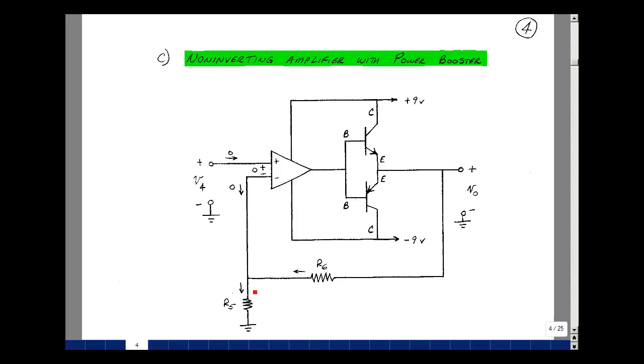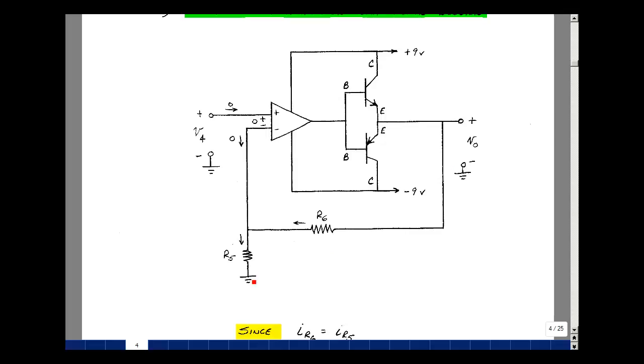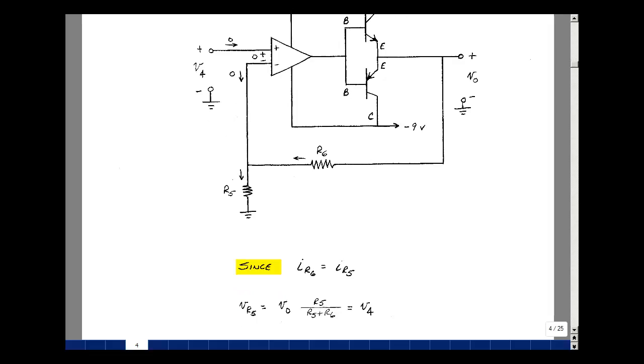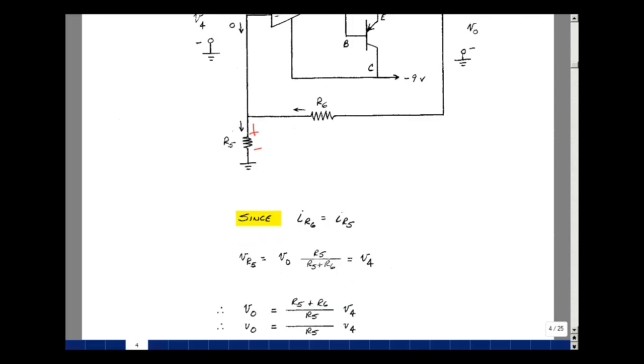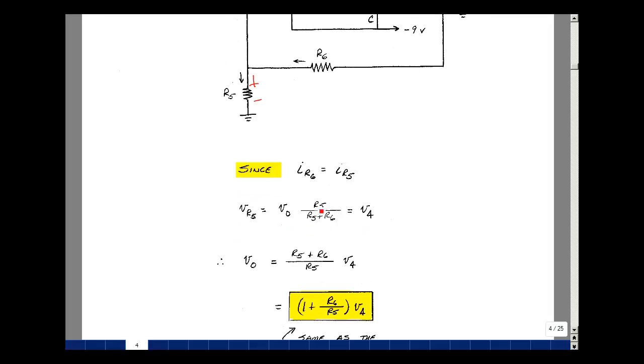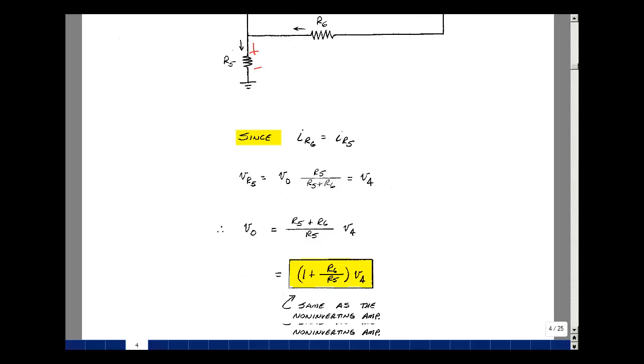I'll put the feedback path around the amplifier and the two transistors. The current flowing on these resistors is the same because there's no current from the op-amp. The voltage across this resistor is R5 over R5 plus R6 times Vout. Because the voltage across here is zero, I can solve for Vout in terms of the input V4. Vout equals V4 times one plus R6 over R5, the same expression as the non-inverting amplifier, but with a current booster.